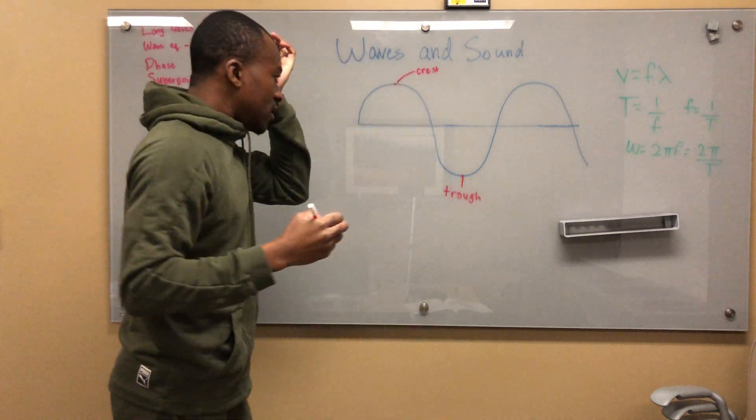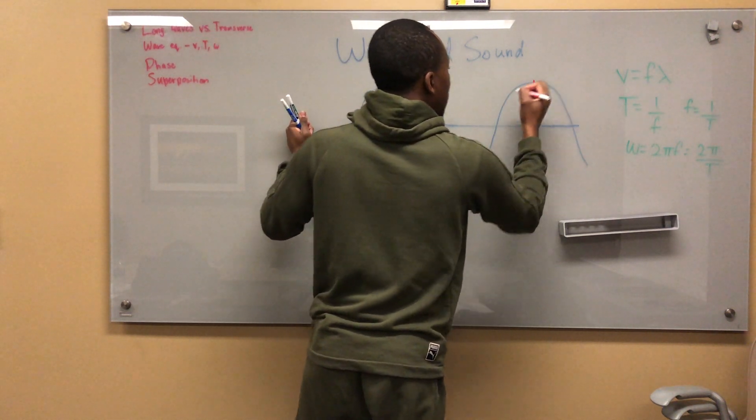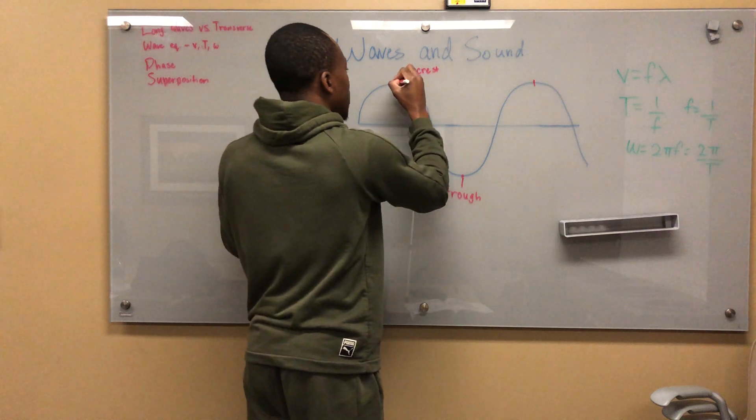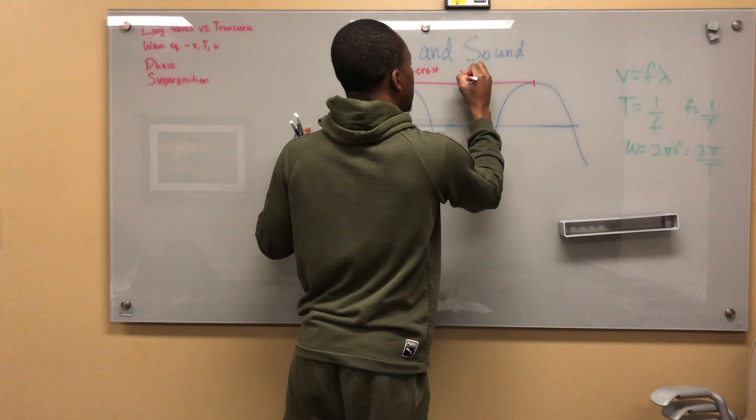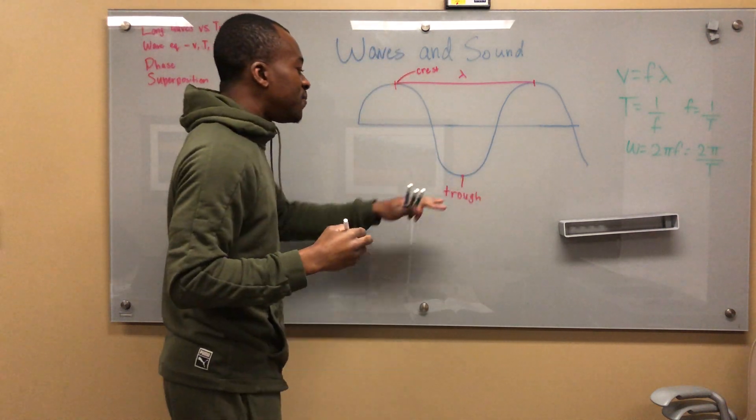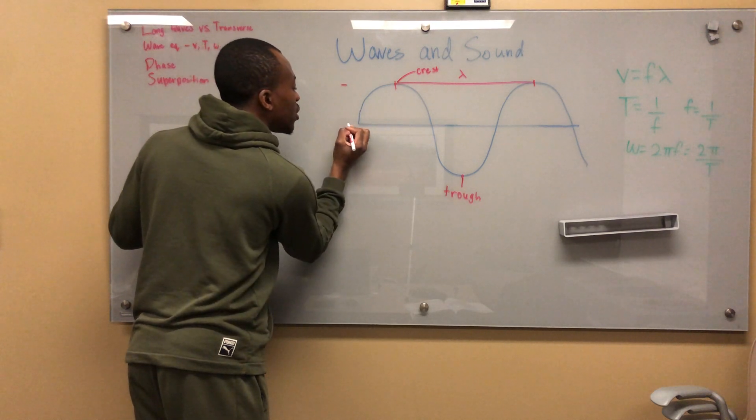A wavelength would be the distance between here and here - two successive crests. So this would be a wavelength, and we can call this lambda. At the same time, there's another distance you might want to take into account.